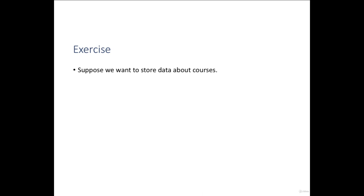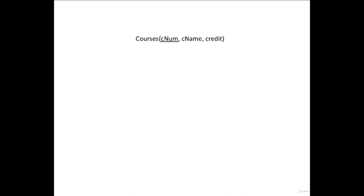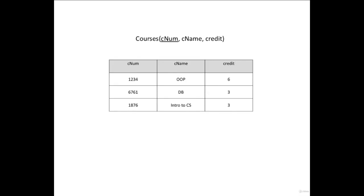Here's a small exercise. Suppose you want to store data about courses. Every course has a unique course number, a name, and a number of academic credit points. Write a schema for the courses table and mark the primary key. The solution: this is the schema for the courses table. It has a CNUM property which is the primary key, a CNAME column, and a credit column. The table would have many rows, each with three values: CNUM, CNAME, and credit.